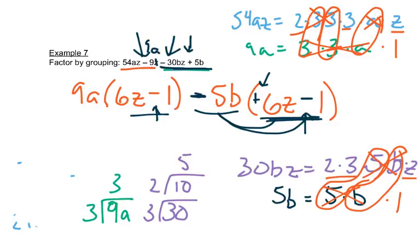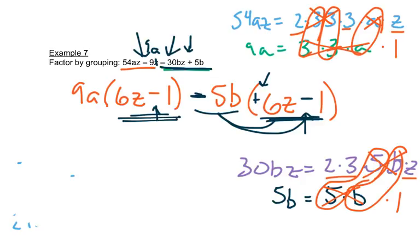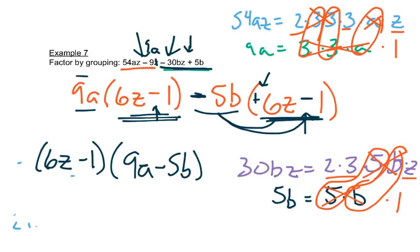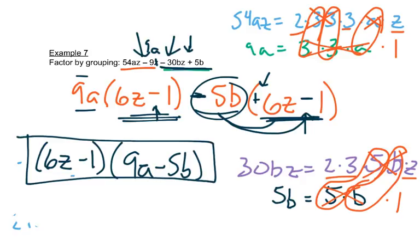Once we get that sign switched by using that negative out in front, then we can write our answer. Now the parenthesis match, so we write them out in front: 6z minus 1. Then we take 9a minus 5b, the pieces that were left here. And there's no common factors in this set of parenthesis or in this set of parenthesis, so we know we're finished.